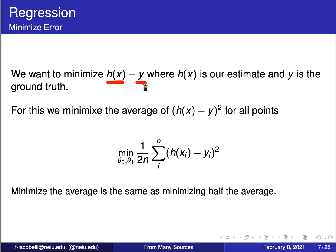We want to minimize the difference between our prediction minus the points — the ground truth. Ideally, this line would pass so close to the points that the average of this distance would be minimized. Because of negatives and positives, we want to get the square of this distance so we always have a positive value, and we want to minimize that.